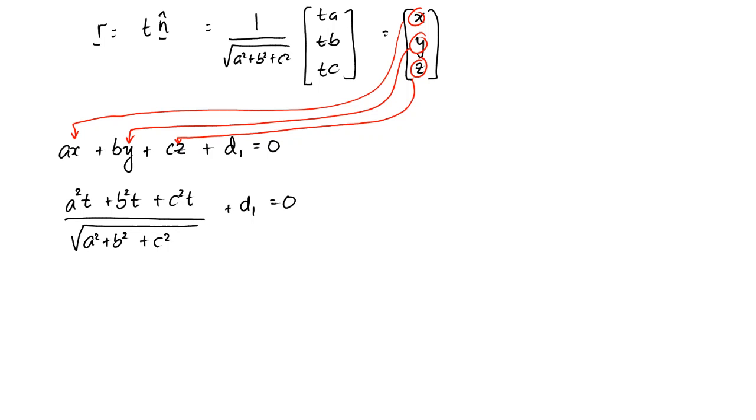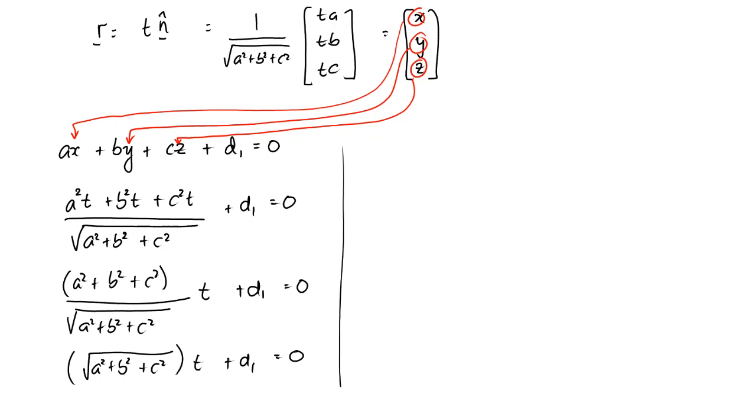Let's just reorganize that slightly. I'm going to have a squared plus b squared plus c squared, all over the square root of that, all times t, plus d1 equals 0. And something squared divided by its square root is just equal to its square root. So that's going to be square root of a squared plus b squared plus c squared times t plus d1 equals 0. Then I'll just solve that for t, because remember that the difference between these two t values - in fact I'll call this t1, because it's the t value for my first plane. So t1 is going to be therefore just equal to negative d1 over the square root of a squared plus b squared plus c squared.